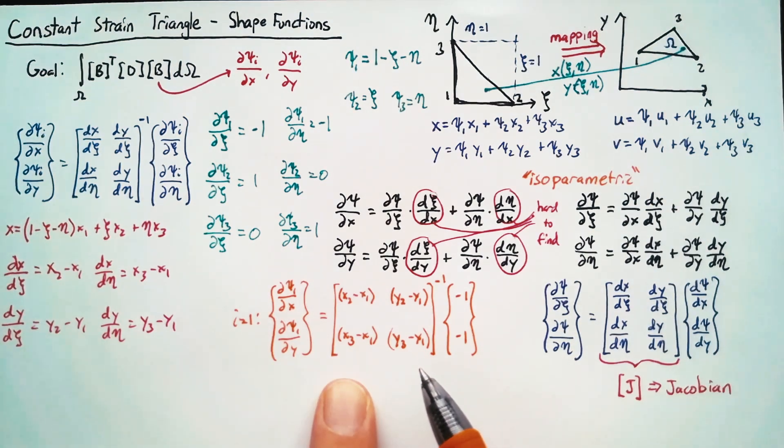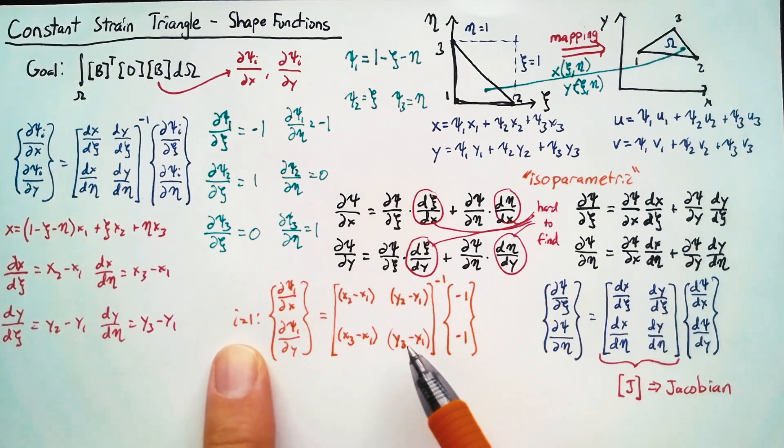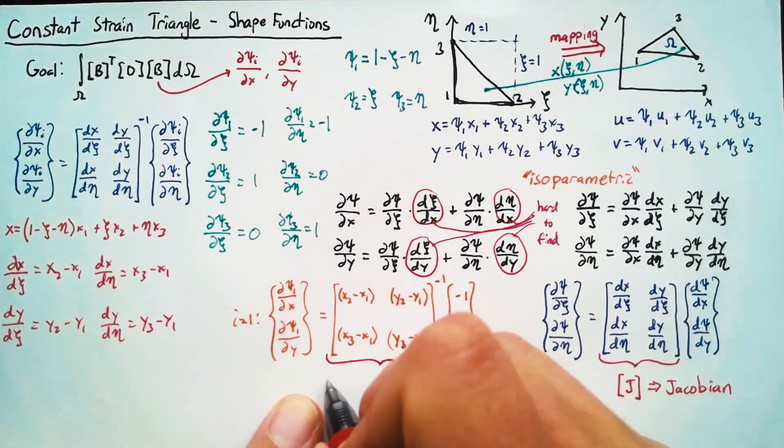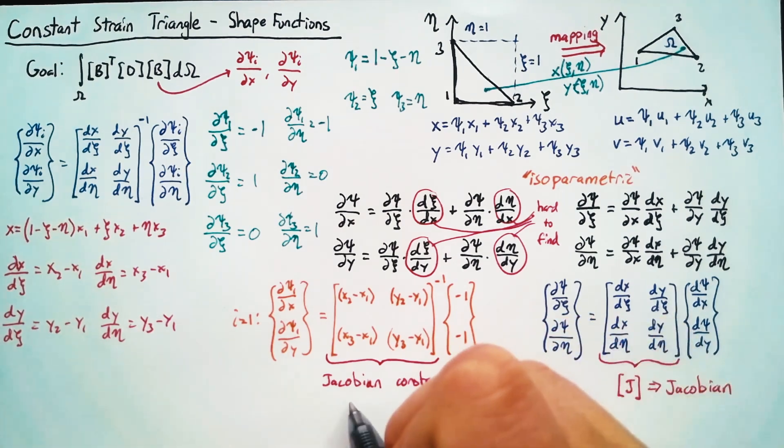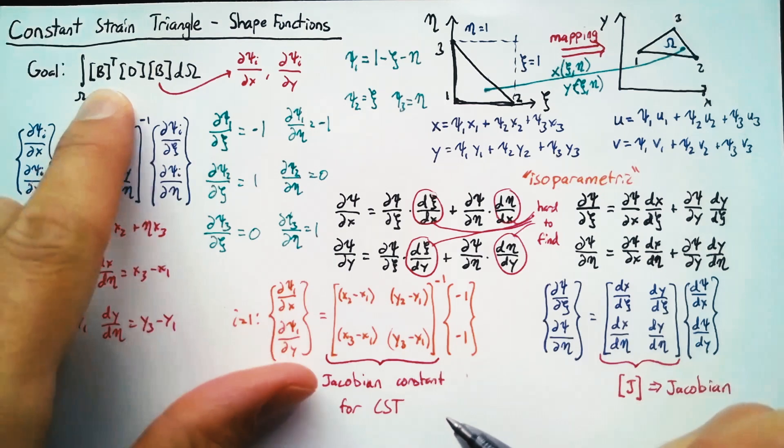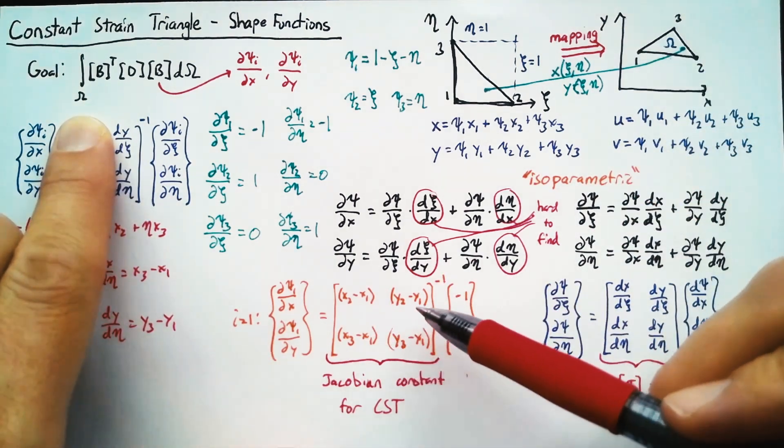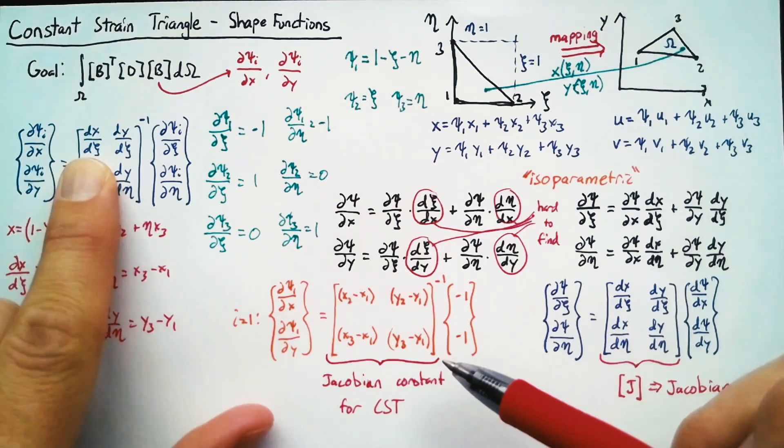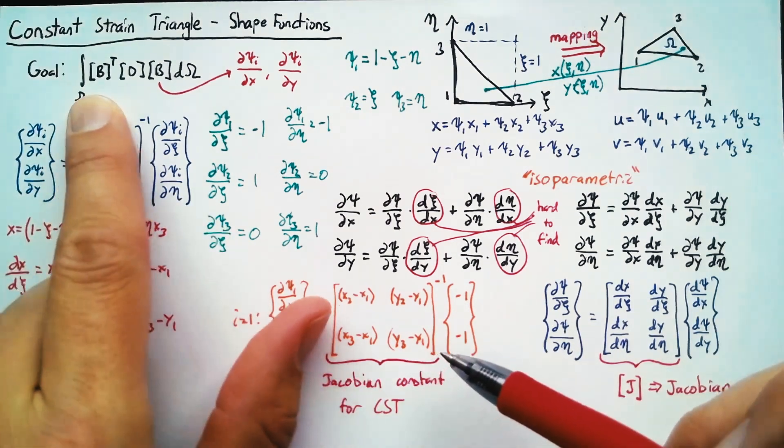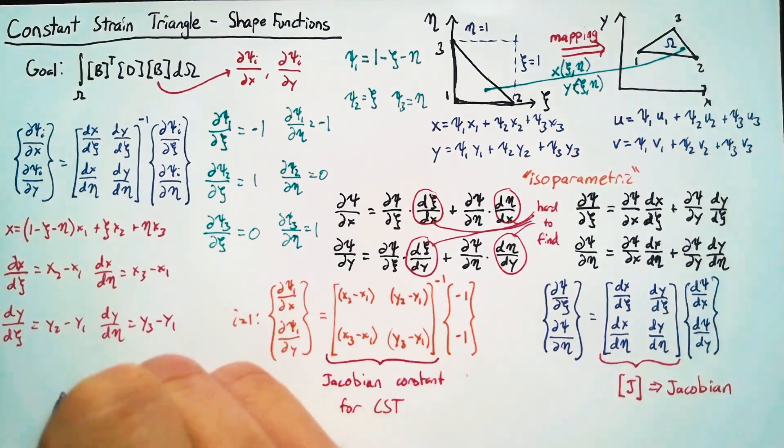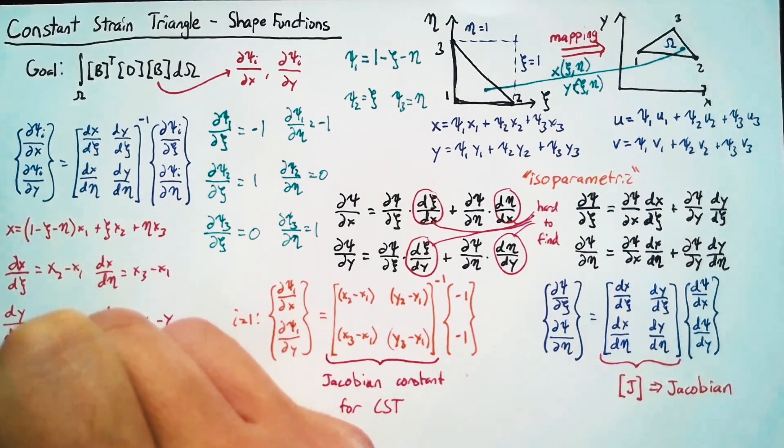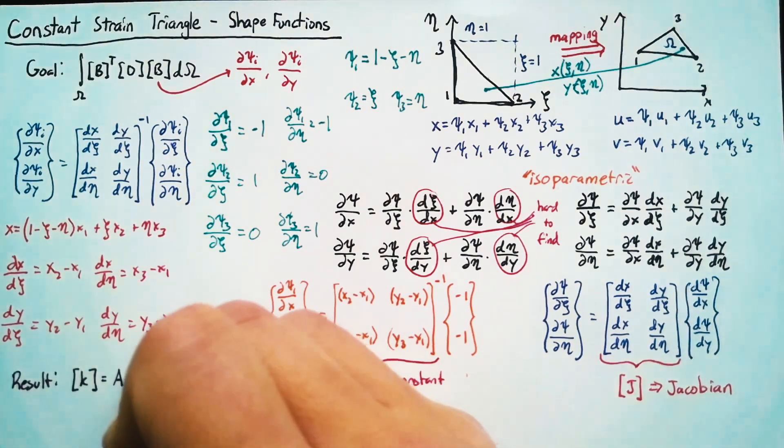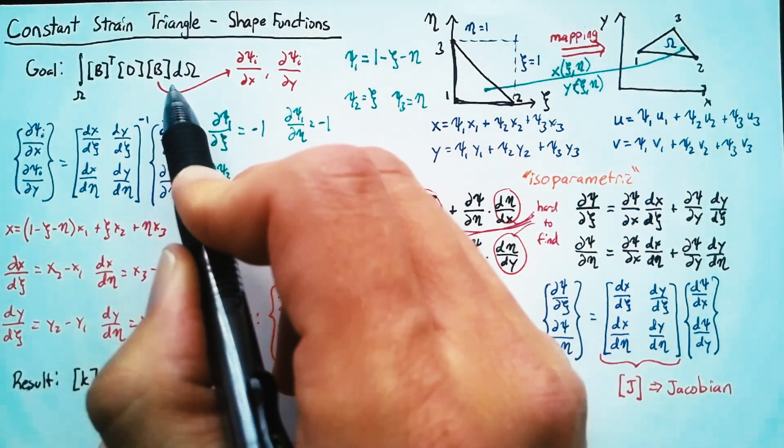And so all we really need to do in order to find this for i equals one is just invert this two by two matrix. Now, one result of using the constant strain triangle is that the Jacobian is constant. And since we're having to integrate over our domain, this makes our life really easy. So all of the derivatives of our shape functions and the derivatives in our Jacobian are constants, which means that whenever we're writing this integral, we can actually just say that our final result is that our stiffness matrix is our area multiplied by our thickness multiplied by this matrix multiplication.